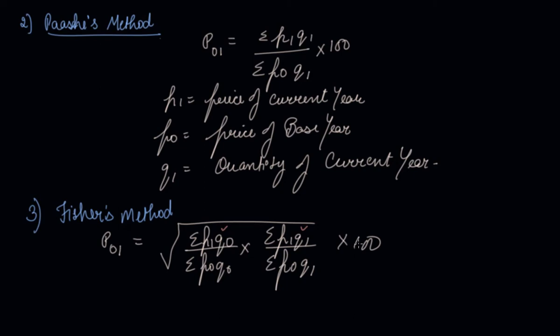Fisher's method is an ideal method. The choice of method for the construction of index numbers will depend upon the object with which a particular index number is constructed. Many formulas may be used, but all may not be suitable for the specific purpose at hand. Some important formulas do not conform to certain appropriate tests of consistent behavior, implying that these formulas give biased results. Fisher's method is considered the ideal method because it is based on variable weights.